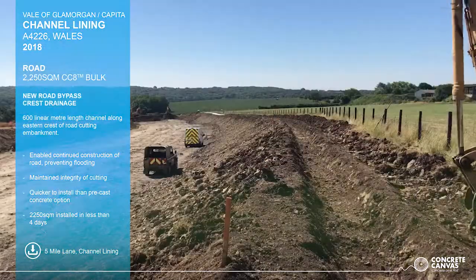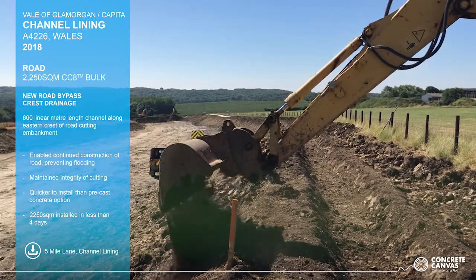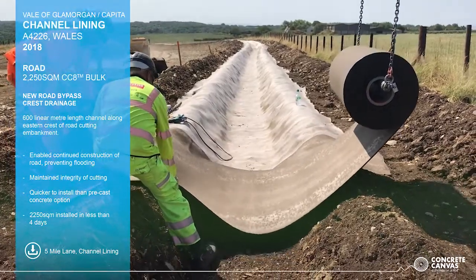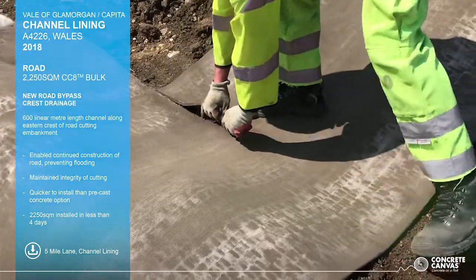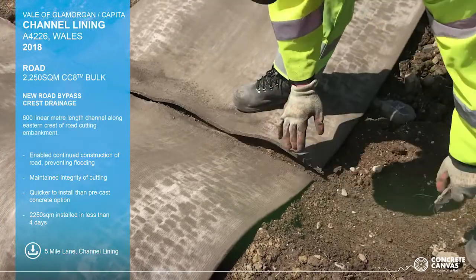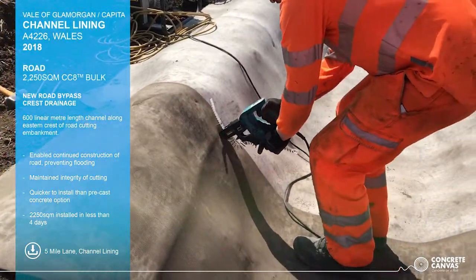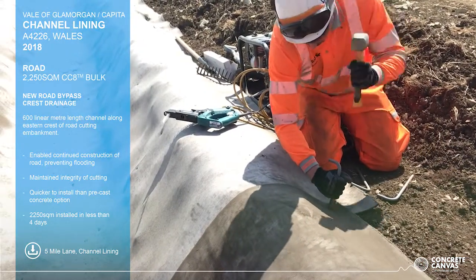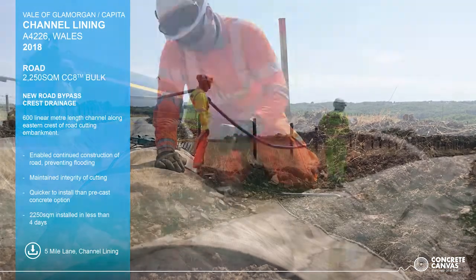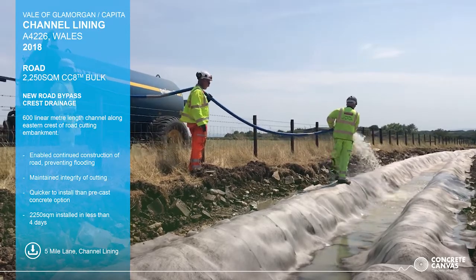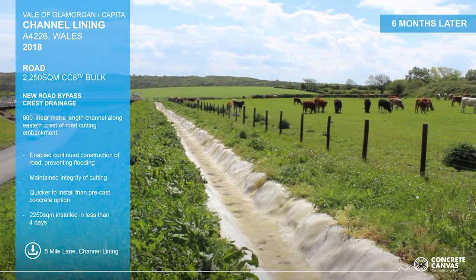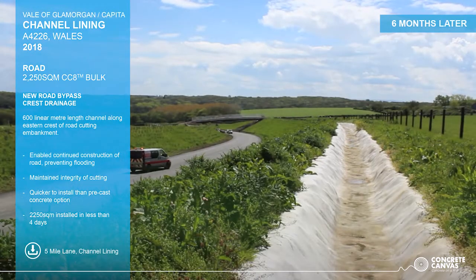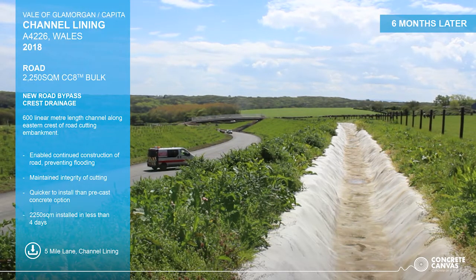The trapezoidal channel was roughly cut using plant with a V-ditch bucket. As CC conforms to the substrate, there was no need to excavate to the high level of tolerance required for precast concrete or rigid plastic systems. CC8 was supplied in bulk rolls and laid transversely. Overlapped layers were screw jointed at 200 mm centres using an auto-fed screw gun, and the material was fixed with 250 mm galvanised steel pegs within crest anchor trenching. The material was hydrated from a 9,000 litre water truck. The four-man gang installed over 2,000 square meters of concrete canvas in less than four days, enabling works to continue below the embankment.